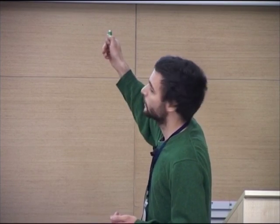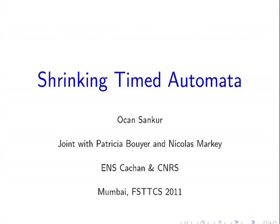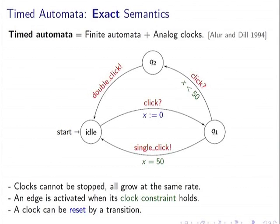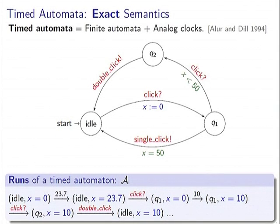Our work is also on timed automata. Just to recall: timed automata are finite automata with clocks. We have clock guards on the edges and clock resets. This defines a natural semantics by delayed transitions where all clocks grow by some amount, and by discrete transitions which are instantaneous, taken in zero time. A sequence of these is one possible behavior of the system.